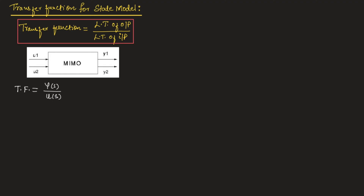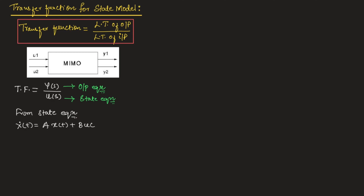We can find Y(S) by using the output equation of the state model and we can find U(S) by using the state equation of the state model. From the state equation, we can write X-dot(T) = A·X(T) + B·U(T). This is the state equation for the state model.